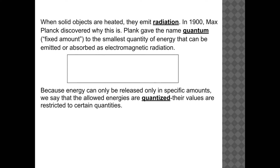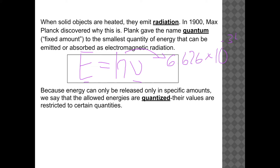Through this, Planck developed an important equation: energy (E) equals h times frequency (nu), where h is Planck's constant. Energy and frequency are directly related — the higher the frequency, the higher the energy. Planck's constant is 6.626 times 10 to the negative 34 joules times seconds. Both the equation and the constant are given on your formula sheet, so you don't need to memorize them.